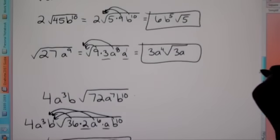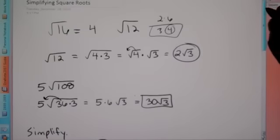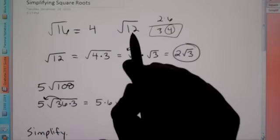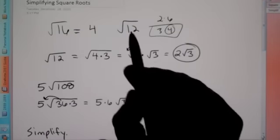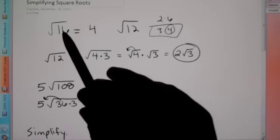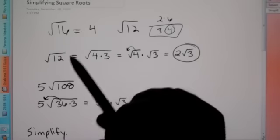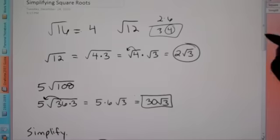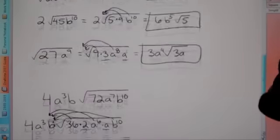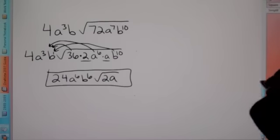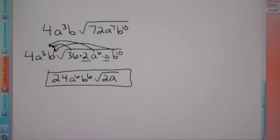If the number you're dealing with is not a perfect square, break it down as much as you can. If it is a perfect square, it simply comes out as a whole number. Good luck, and ask questions at school if you need more help.